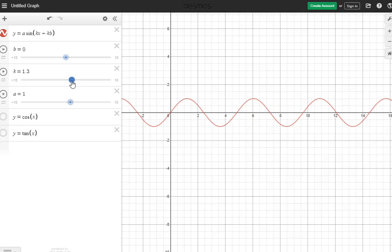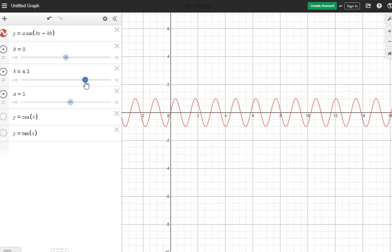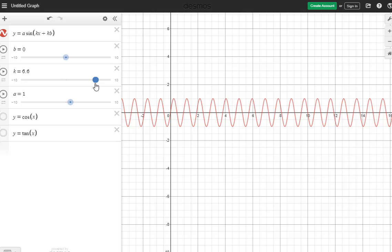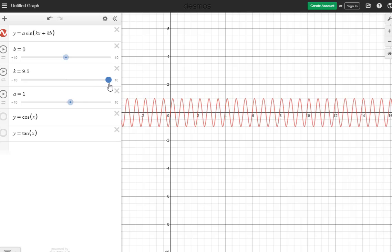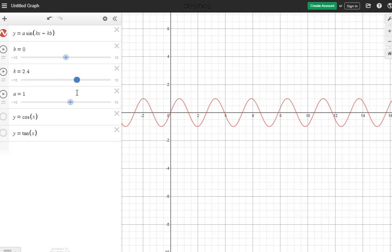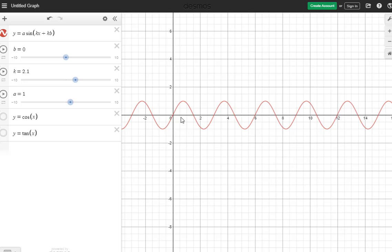Now watch what happens when I make K bigger. As K gets bigger, greater than one and bigger, it's compressing - it's almost looking like a spring - but it's compressing the sine function.